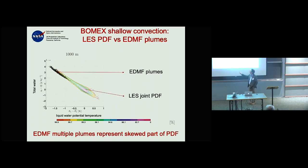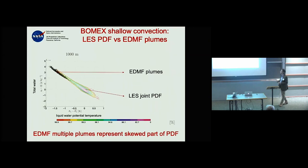You see a very skewed distribution: a highly populated Gaussian region in the environment, but then a very skewed tail where all the action is taking place — the energetic plumes. The multiple plumes from the EDMF parameterization match that tail region very well.